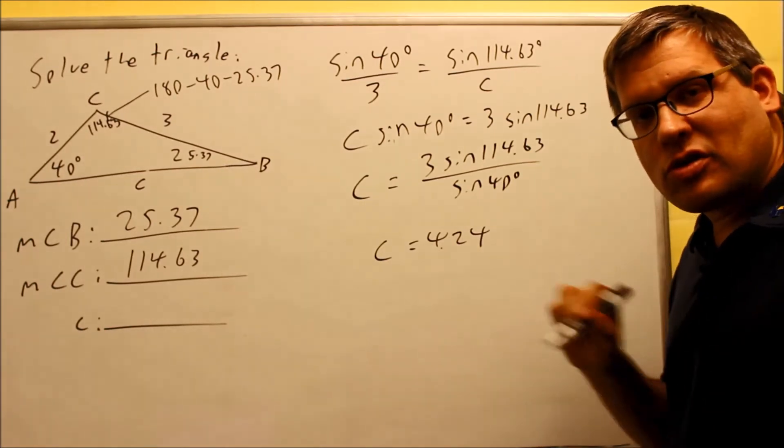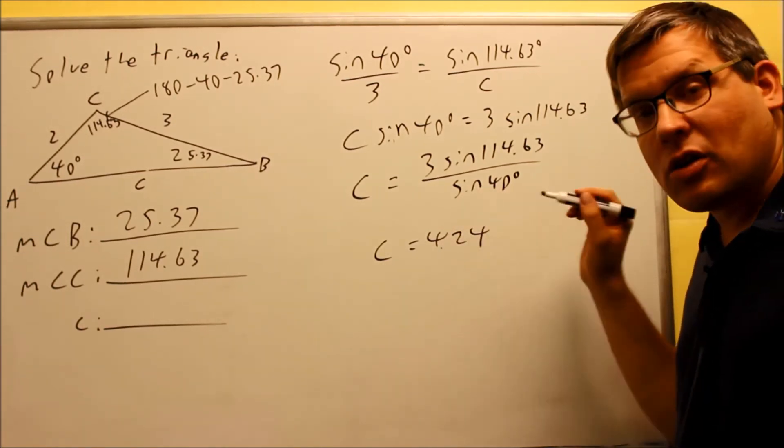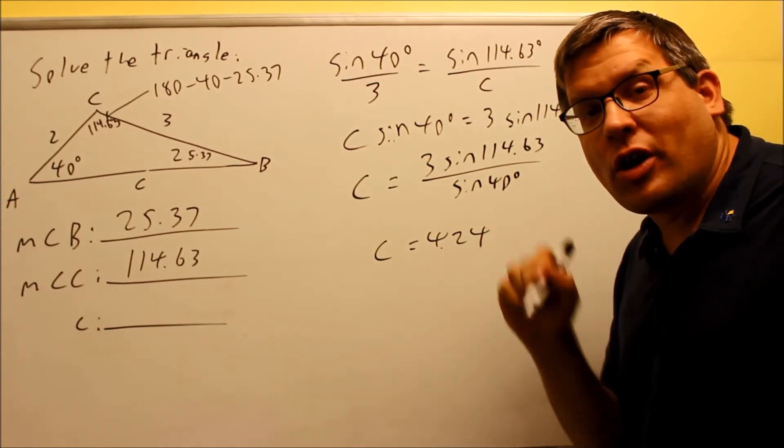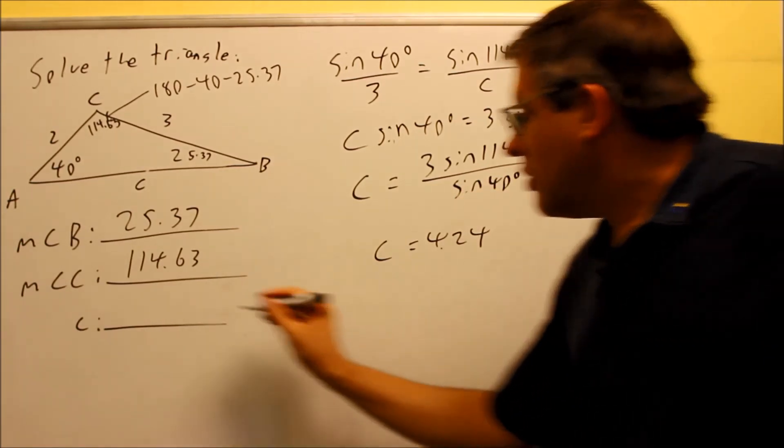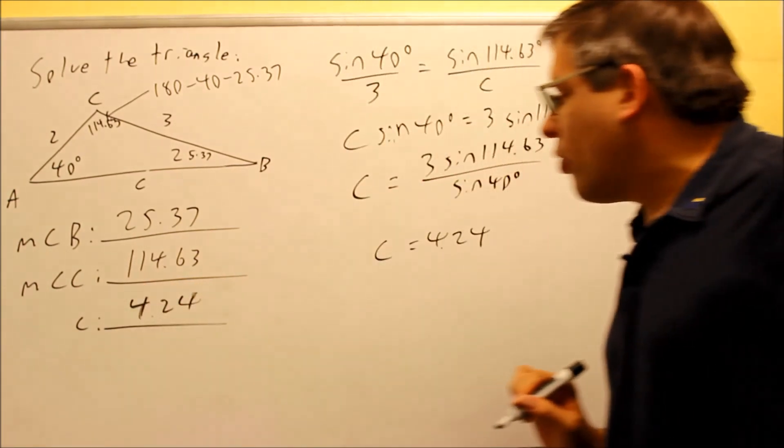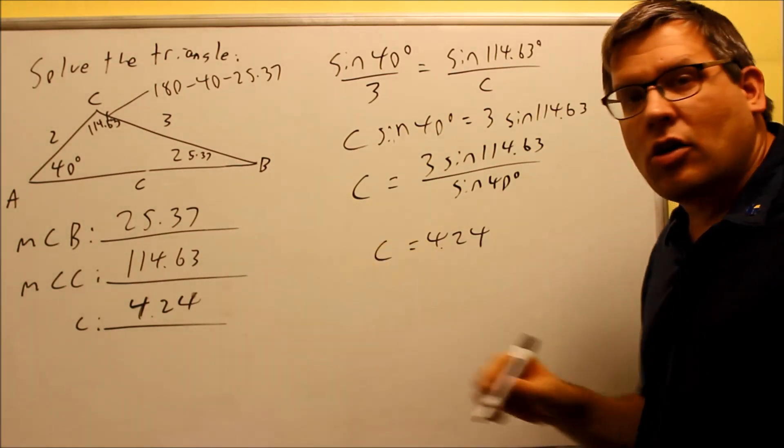So in my class personally on a test, it's not going to matter if you're one or two decimal points off, it's going to be close enough, but those online homework programs have pinpoint accuracy, so you definitely need to have all the decimals in there to get the correct answer. But in this case we're going to say our answer is 4.24, and our triangle is solved because we provided all the missing information.